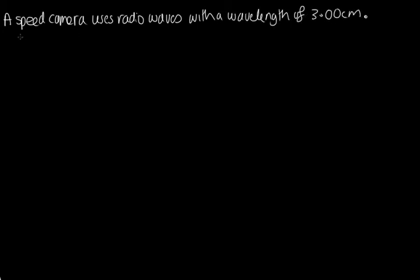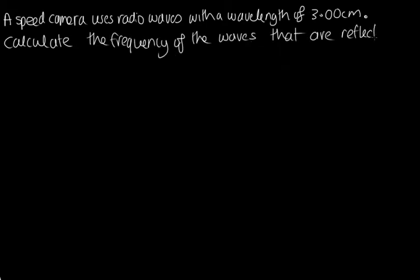Let's do a calculation now where we'll work out the frequency detected by a radar as a car is travelling past at a very reasonable speed. So the question is, a speed camera uses radio waves with a wavelength of 3 centimetres. Calculate the frequency of the waves that are reflected off a car travelling at 60 kilometres per hour.